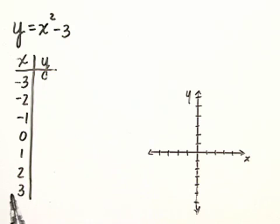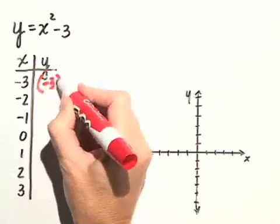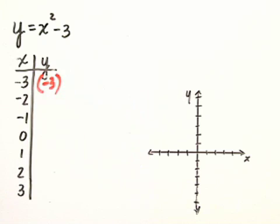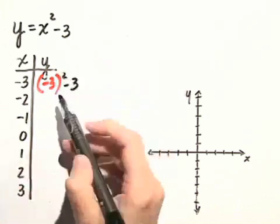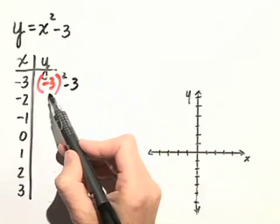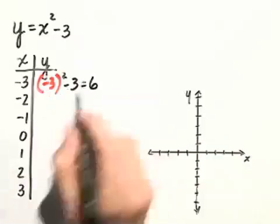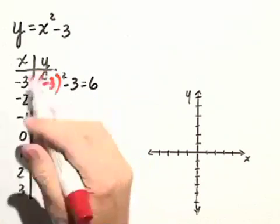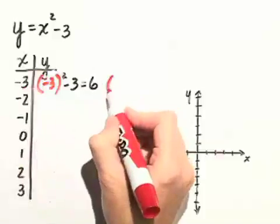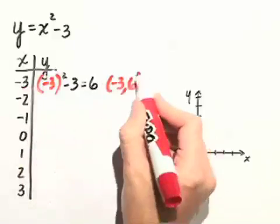Let's first start by substituting in negative 3 for x. We have negative 3 squared minus 3. Negative 3 squared is just 9, minus 3 gives us 6. So the first point that we'll plot will be when x is negative 3 and the y value is 6.